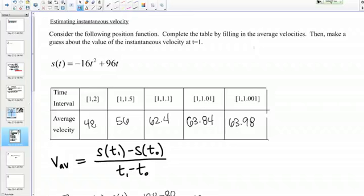Now the next thing we have to do is make a guess about the value of the instantaneous velocity at t = 1. What does the instantaneous velocity mean? The instantaneous velocity at t = 1 is just what it sounds like: the velocity at that single instant. So far I just have average velocities, the velocity over an interval of time, but I want to find the velocity just at the single instant t = 1. So how would I do that?